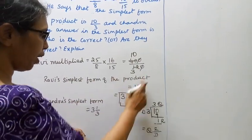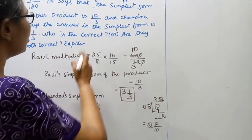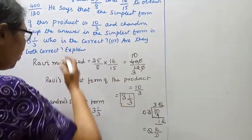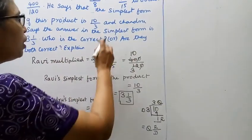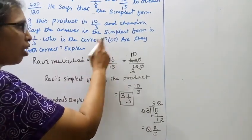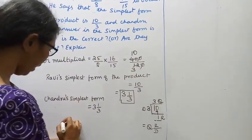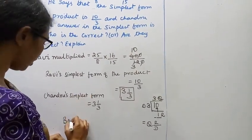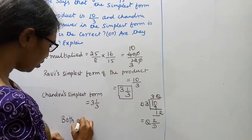Ravi's simplest form is 10 by 3, Chandru says the answer in simplest form is 3 1 by 3. Who is correct? Are they both correct?